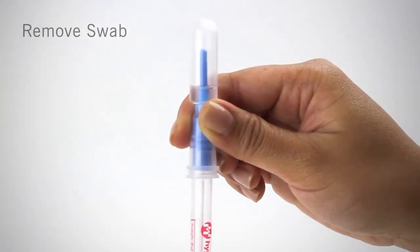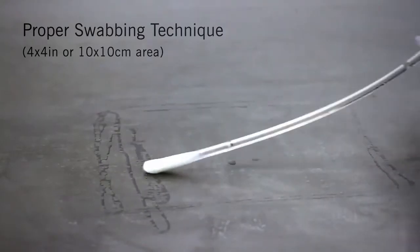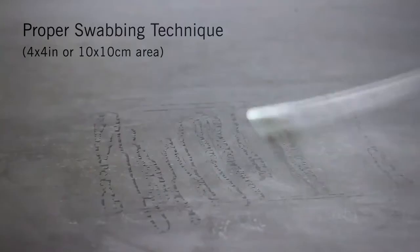Now let's see how it works. The first step is collection. Remove the swab from the tube. Swab a 4 by 4 inch square area in a zig-zag pattern, swabbing the area with even coverage.